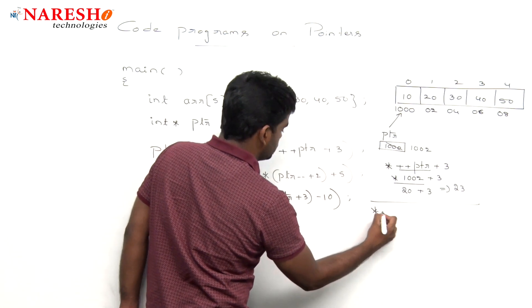Next one, here it is with that remaining values, it will execute the second expression pointer PTR-- plus 2 plus 5. Post decrement, substitute the value and then decrease. So PTR value is 1002. 1002 plus 2 plus 5. Here it is after substituting 1002, it will be decreased. It is nothing but 1002 becomes 1000.